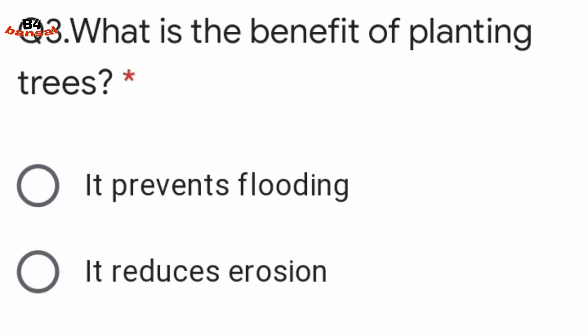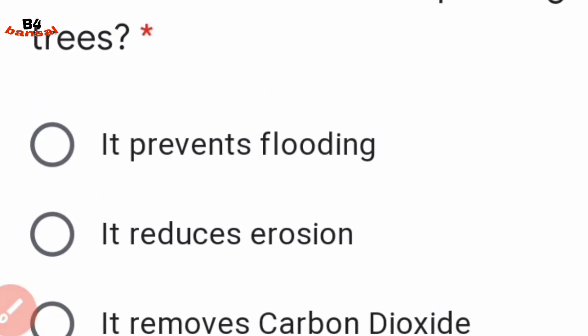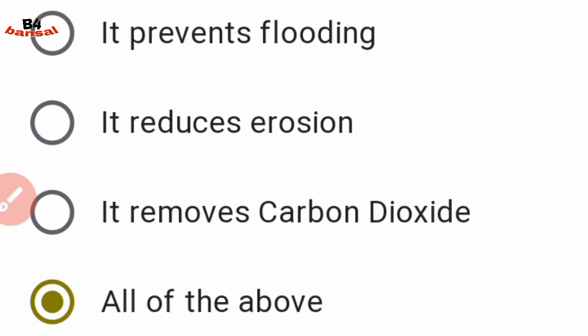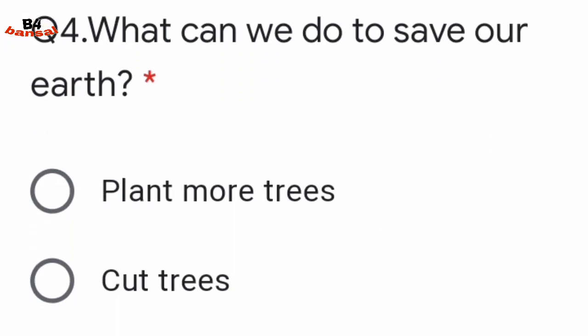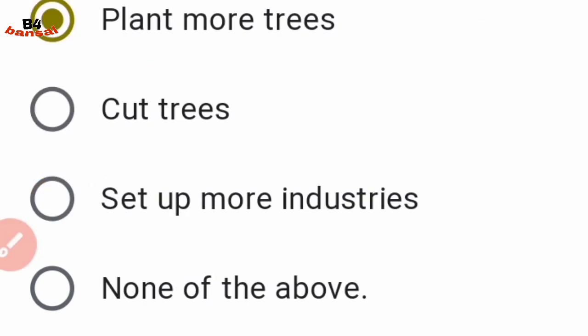Question number three: what is the benefit of planting trees? Next question: what can we do to save our earth? Options include: we should plant more trees, we should cut trees, or set up more industries. Option number one — we should plant more trees — is the correct answer.